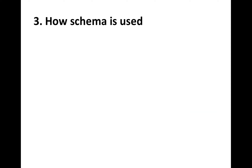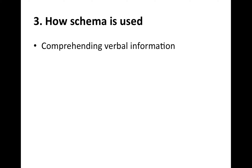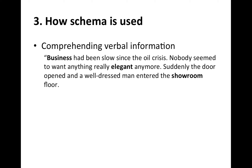Now, how is schema used? Schema is used when comprehending verbal information. For example, when you are reading text, your cognition searches for related schema as you are reading and activates related schema. It sets up expectations based on what you already have in the schema, and constantly compares and contrasts the new information with existing knowledge. Here is an example borrowed from a book by Driscoll.